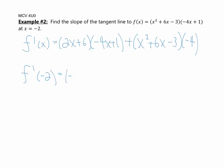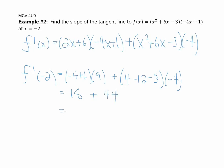Substituting x equals negative 2: in the first bracket we get negative 4 plus 6, and in the second bracket we get 9. I encourage you to pause and try this yourself. In the next bracket we get 4 minus 12 minus 3, times negative 4. Working through that gives 18, and then 4 minus 12 is negative 8, giving negative 11 times that, so plus 4, which gives a final answer of 62. We'll practice the product rule more tomorrow — get really good at this before we add even more rules. Thanks for listening.